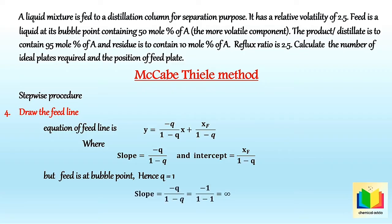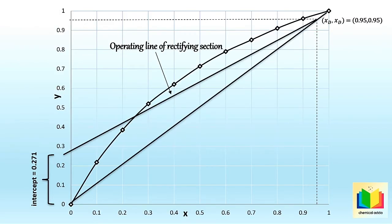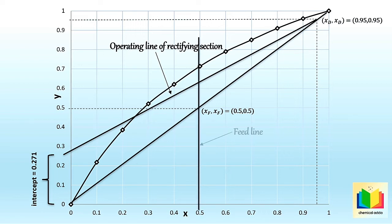The fourth step is to draw the feed line (q-line). Since the feed is a liquid at its bubble point, q = 1. The slope of the feed line = −q/(1−q) = −1/(1−1) = infinity. Since the slope is infinity, we draw the feed line parallel to the y-axis. For this, we first plot the point (xF, xF) = (0.5, 0.5) on the diagonal, then draw the feed line parallel to the y-axis from that point.